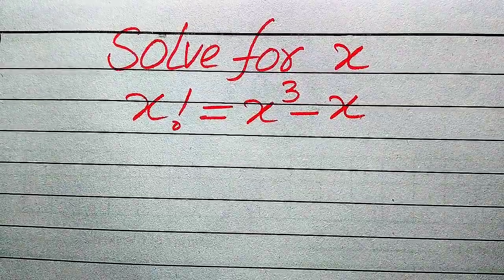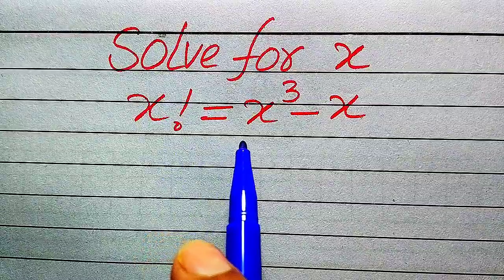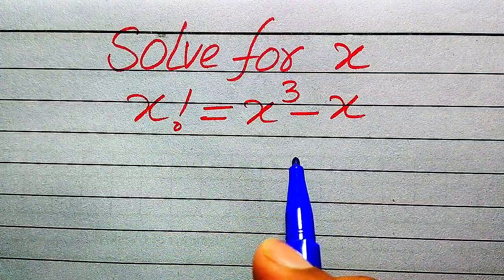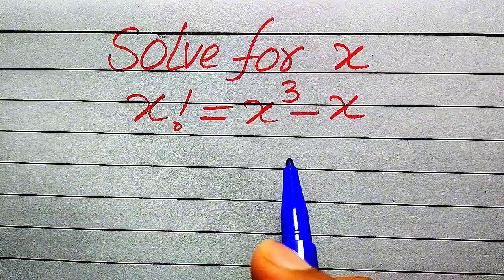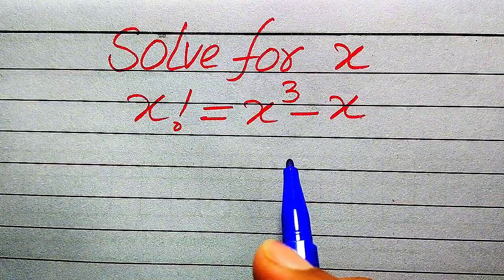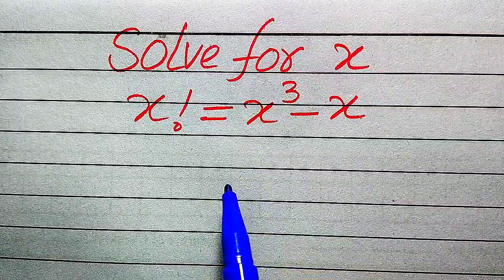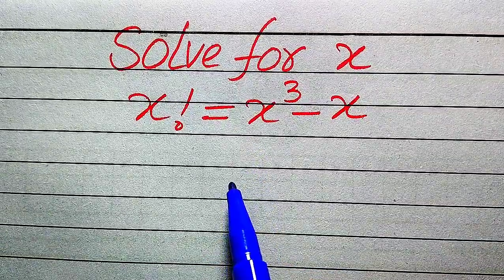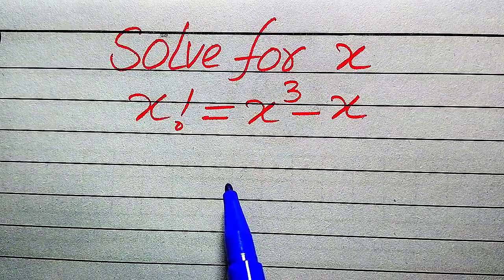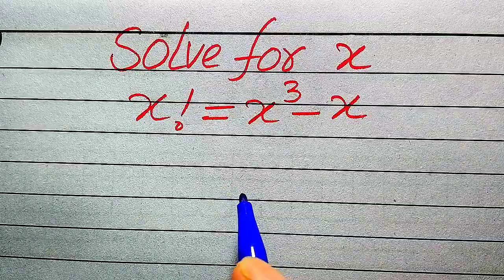Hello everyone. We are going to solve this problem for all values of x where x factorial equals x cubed minus x. At the end, we will verify which values of x are solutions of this equation and which are extraneous roots. If you have any other method in mind, please write it in the comment section.